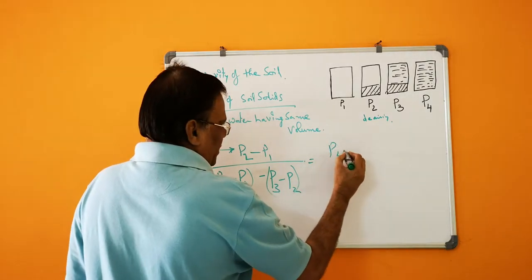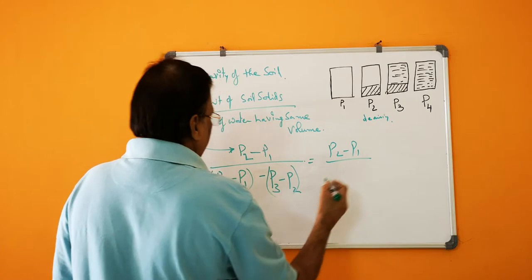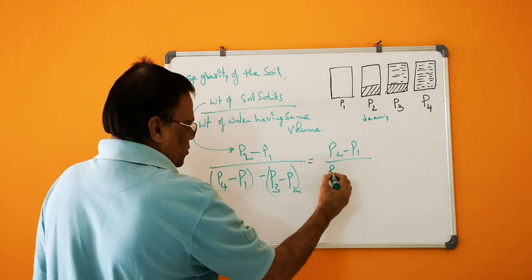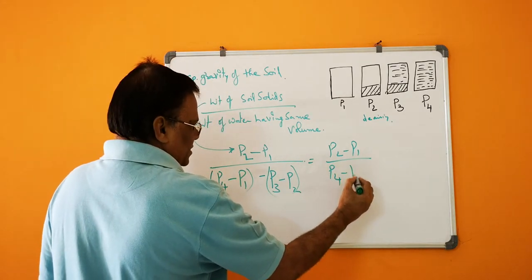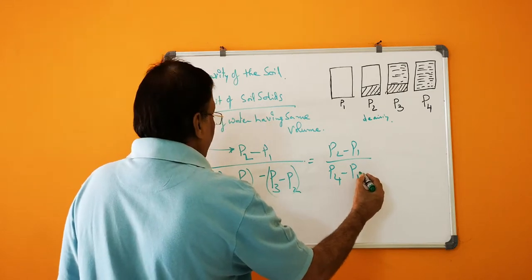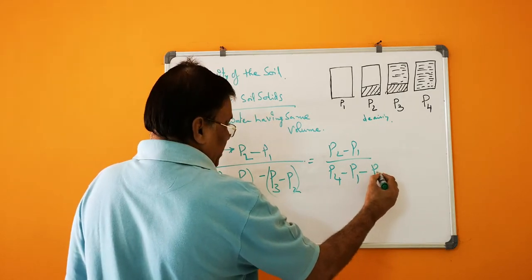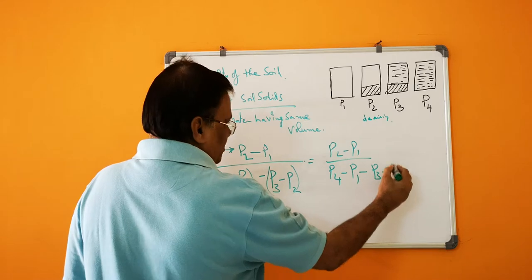Then P2 minus P1 by P4 minus P1 minus P3 plus P2.